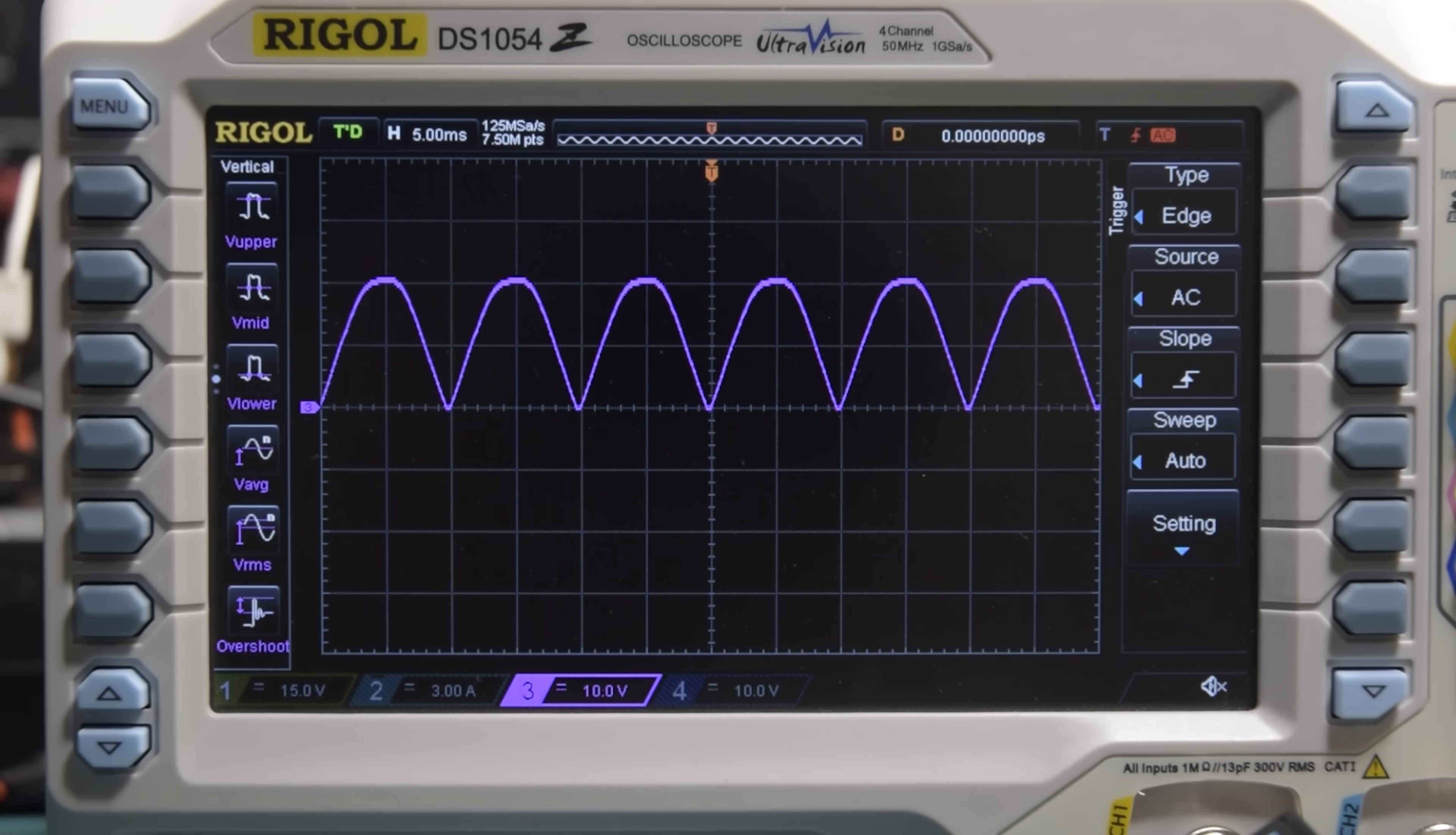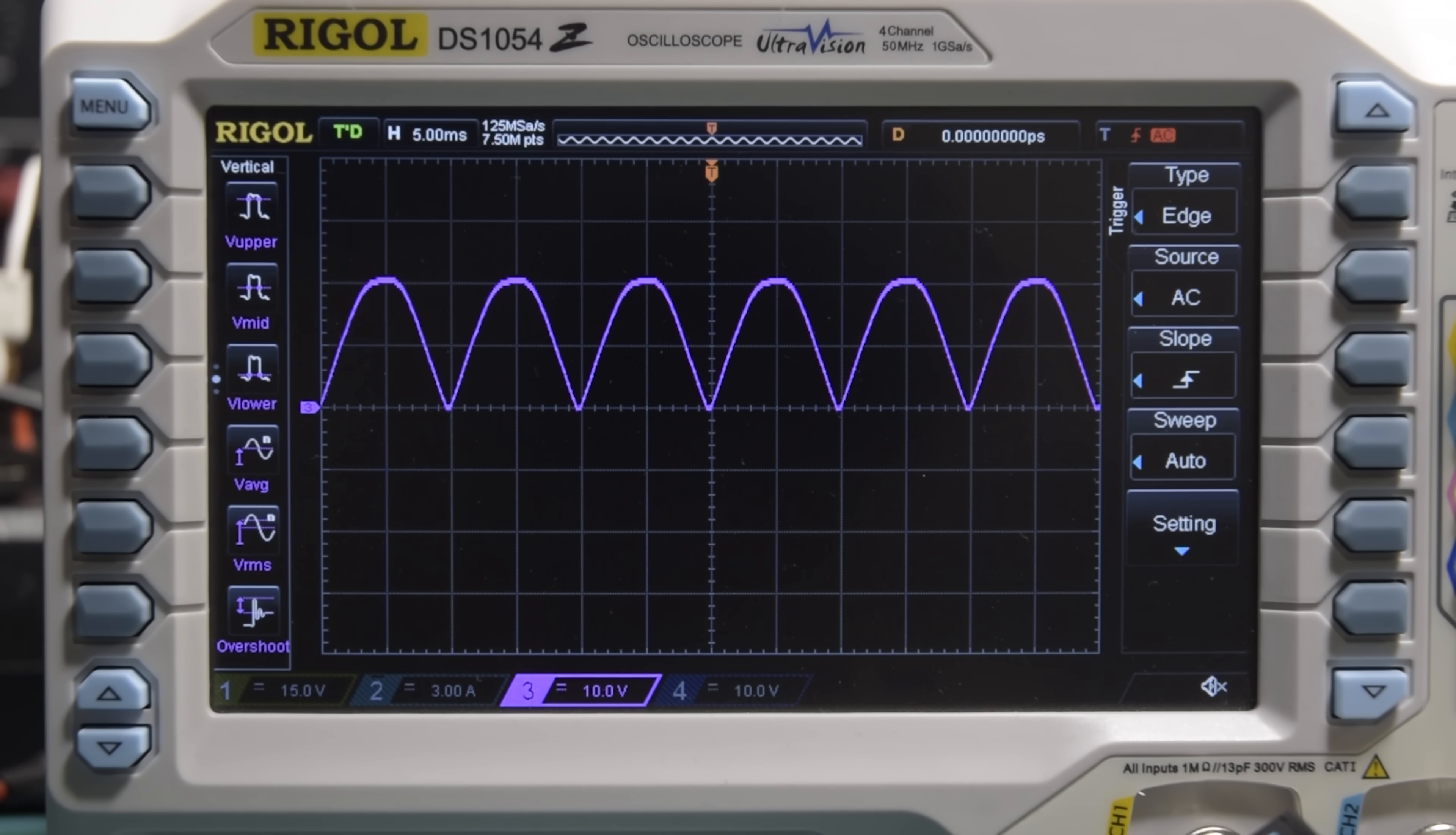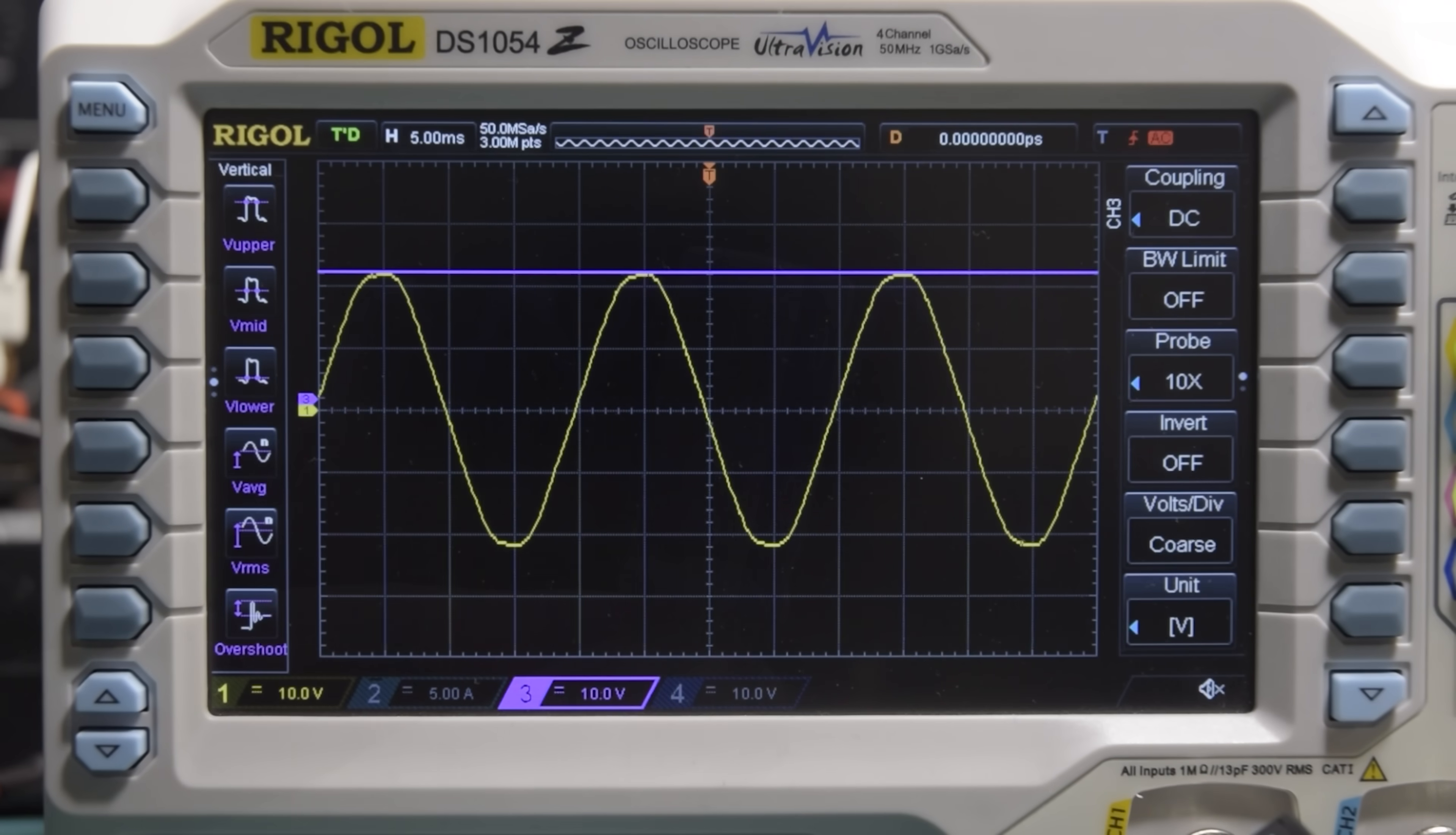Anyway, back to smoothing our output from the rectifier. If you've watched any of my recent videos, you'll know that there's a particular component we can always rely on when we need to smooth voltage. Capacitors. Capacitors store charge, meaning when the AC voltage is at its peak, the capacitor will get charged up to that voltage through the rectifier, and then when the AC voltage drops down, the capacitor will stay charged and keep the voltage at that level.